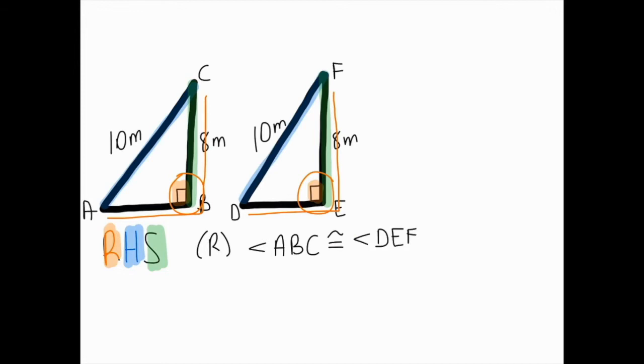My hypotenuse I know is directly opposite my right angle so for my H I'm going to show that side AC is congruent to side DE. Again traveling in that same direction each time.